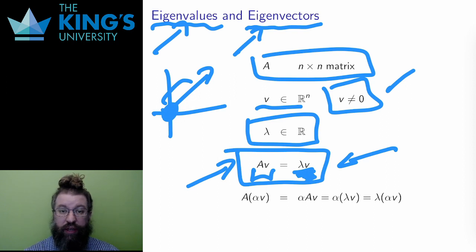Finally, if V is an eigenvector in this definition, then all multiples of V are also eigenvectors. I've done the calculation here, and it's basically just linearity.